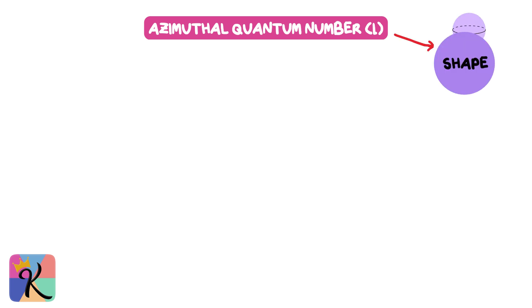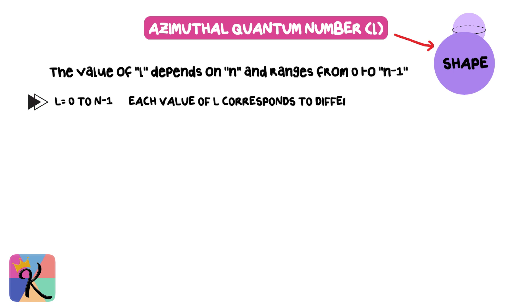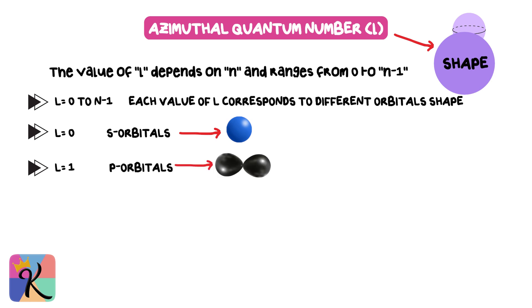Next up is the azimuthal quantum number (l), which describes the shape of an electron's orbital. The value of l depends on n and ranges from 0 to n-1. Each value of l corresponds to a different orbital shape. l=0: s orbitals are spherical. l=1: p orbitals are dumbbell shaped. l=2: d orbitals have more complex shapes, like clovers. l=3: f orbitals are even more intricate, but are less relevant for organic chemistry.